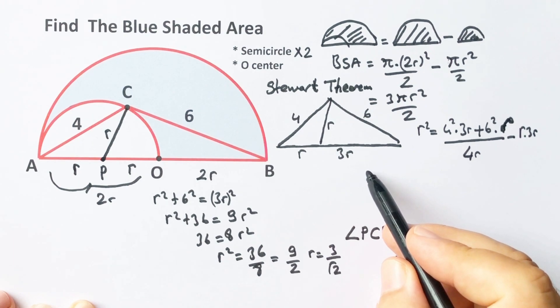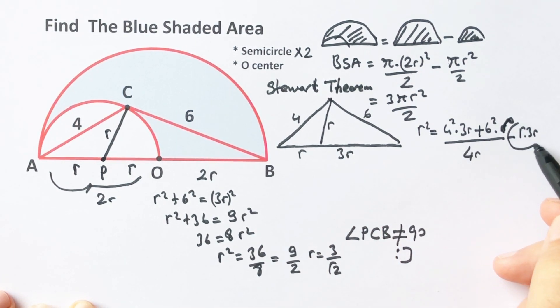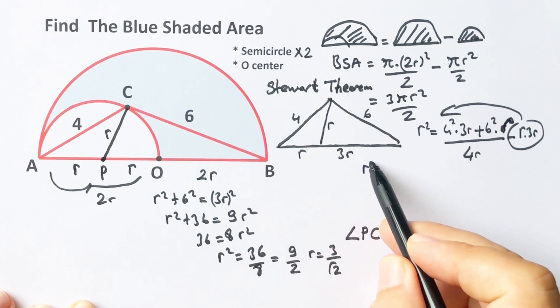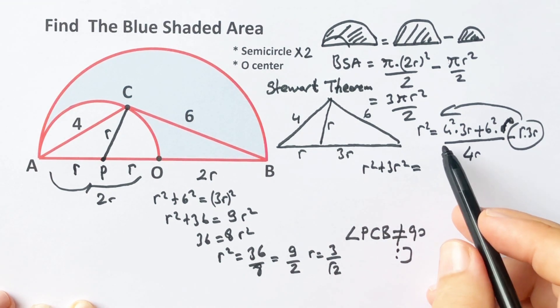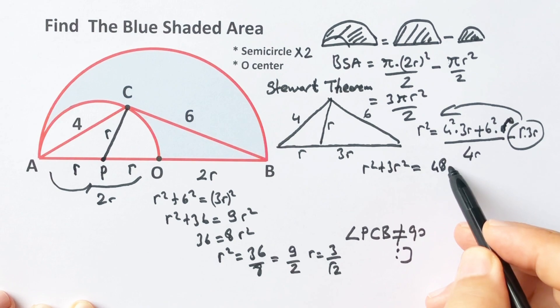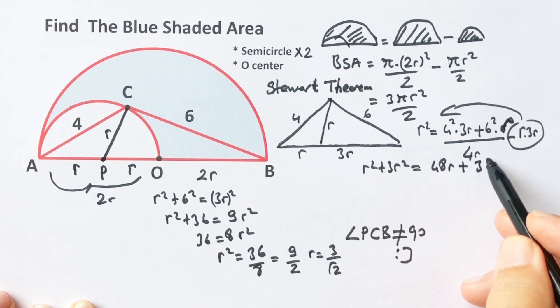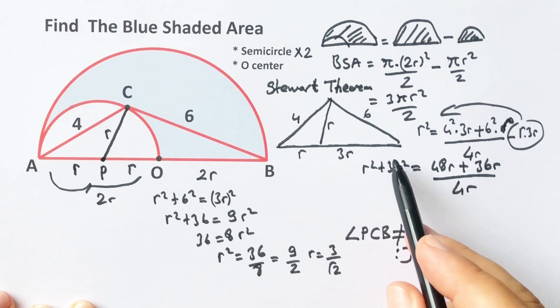Therefore, if we move this expression to the left side of the equation, r² plus 3r² equals 48r plus 36r over 4r.